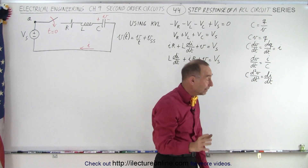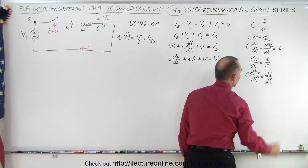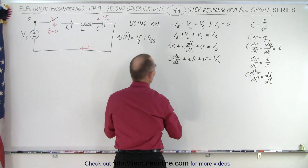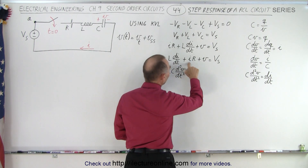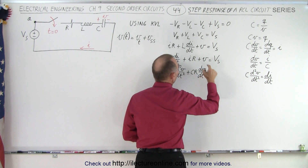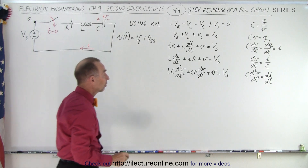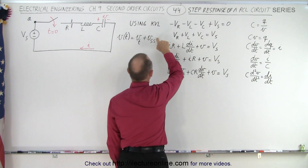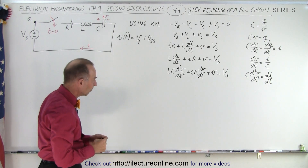Taking the derivative of both sides again, we get C times the second derivative of voltage with respect to time equals the first derivative of current with respect to time. We replace dI/dt with the appropriate expression, giving L·C times d²V/dt² plus i·R. Since i equals C·dV/dt, this becomes plus C·R·dV/dt, plus V, equals the source voltage. Now we have a differential equation. Setting it equal to zero gives us the transient voltage; the source voltage gives us the steady-state voltage. Dividing everything by LC, we get d²V/dt² plus R/L · dV/dt plus 1/(LC) · V equals zero.